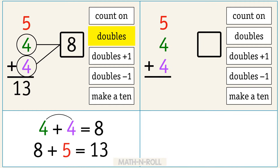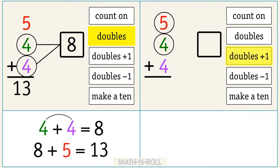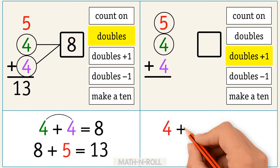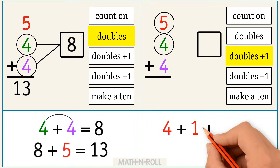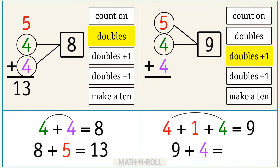Now let's solve the same problem but with a different strategy. Circle 5 and 4. Let's use the doubles plus 1 strategy. We can rewrite 5 as 4 plus 1. Then we add 4. 4 and 4 are doubles. We know that 4 plus 4 equals 8. We add 1 and we get 9. Now add 4 to 9 to get 13.